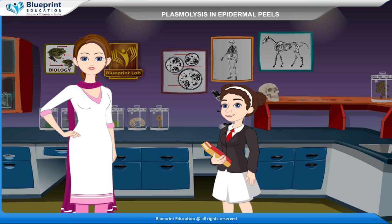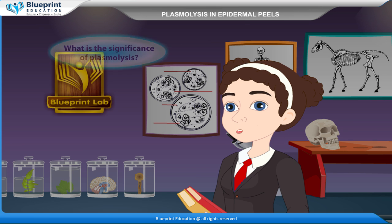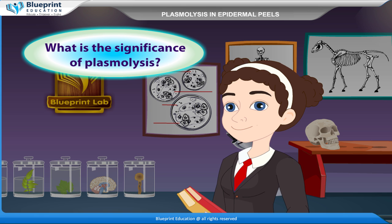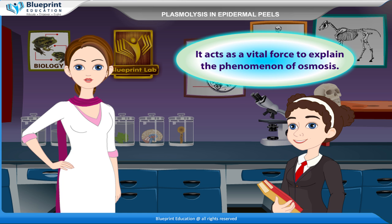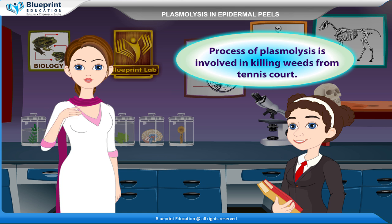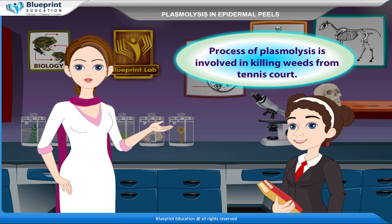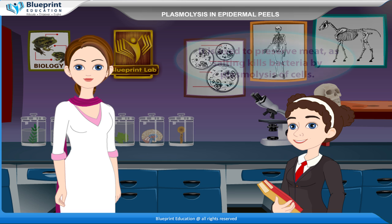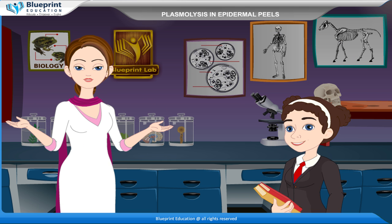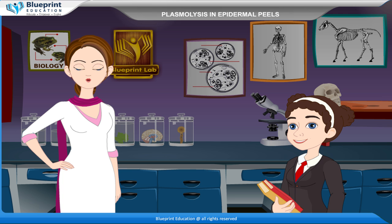Plants in this condition wilt. What is the significance of Plasmolysis? It acts as a vital tool to explain the phenomenon of osmosis. The process of Plasmolysis is involved in killing weeds from tennis courts. It is also used to preserve meat, as salting kills bacteria by Plasmolysis of cells. Let's do an experiment to demonstrate Plasmolysis and De-Plasmolysis in peels of onion bulb, Tradescantia, or Rhoeo leaves.